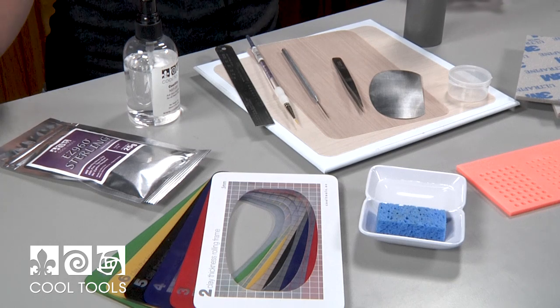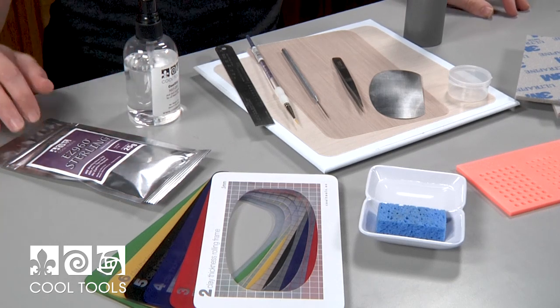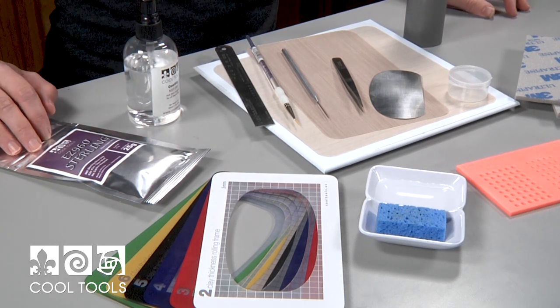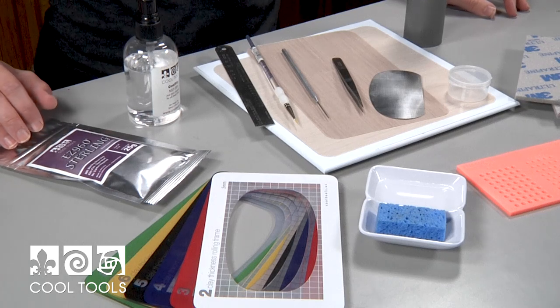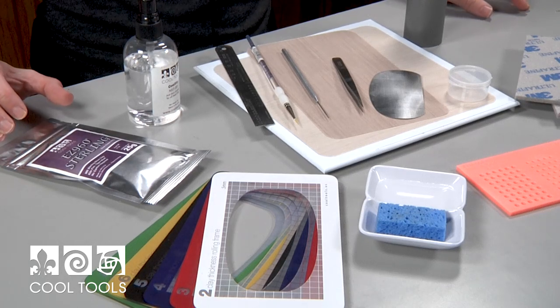Here's what you're going to need for this project. Cool Slip, Easy 960 Sterling Clay, and I ended up using 6 grams for both hoops, so they're really lightweight.